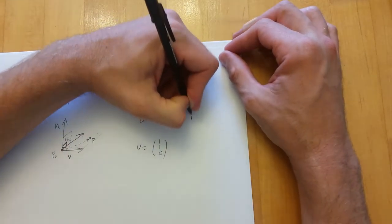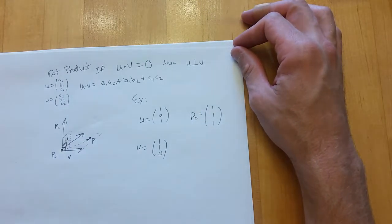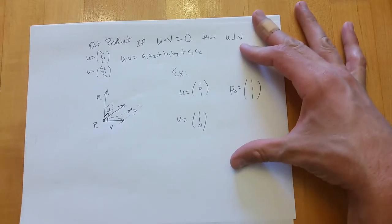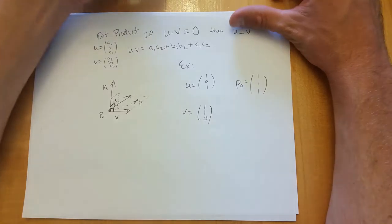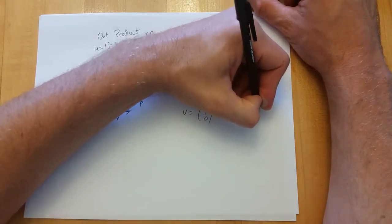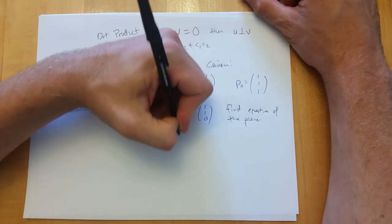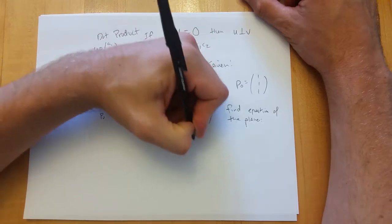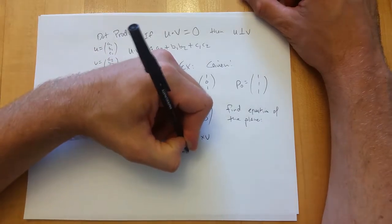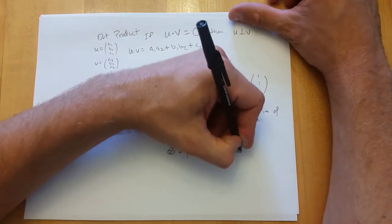Let's do a numerical example. We'll pick nice numbers for u and v, and I'll set p₀ to be (1, 1, 1) — a lot of ones, but it won't be a problem. The first thing we need to do is get the normal vector: n = u cross v. Once we have that, we can find the equation of the plane.